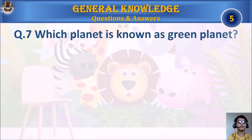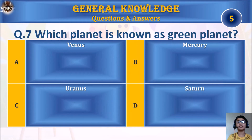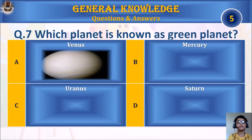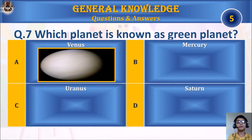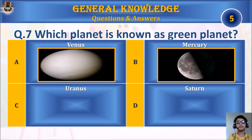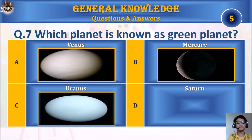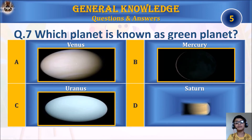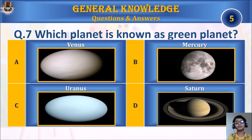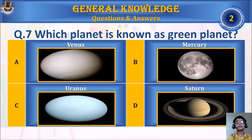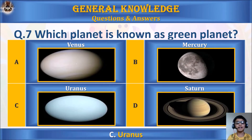Question 7: Which planet is known as the Green Planet? A. Venus, B. Mercury, C. Uranus, or D. Saturn. Your time starts. The answer is C. Uranus.